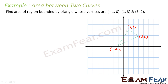Now to find the area of the triangle, what we can do is: if you integrate this line with respect to x, we will get this big triangle region. Similarly, integrating each of the other curves with respect to x gives us corresponding big triangular regions.